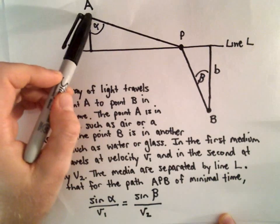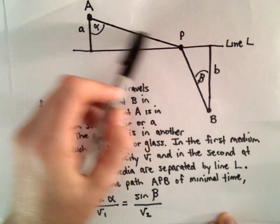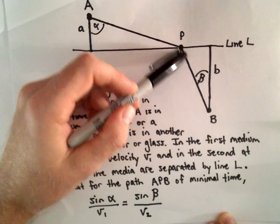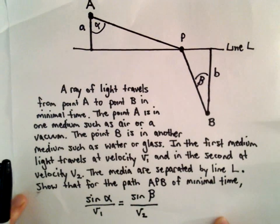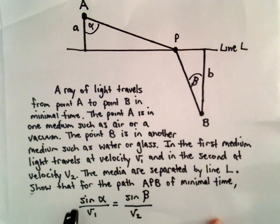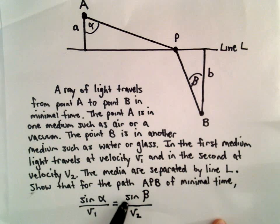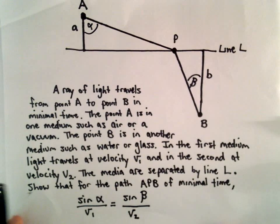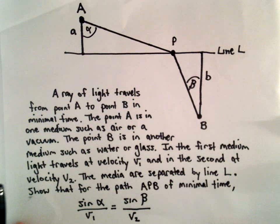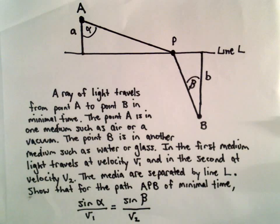So maybe this is the sun — it hits the water, bends, and then goes to some other point. Again, we have to show that sine of alpha over V sub 1 equals sine of beta over V sub 2. As always, definitely feel free to post a video response. I'll check them out and approve them.